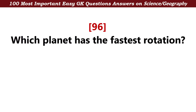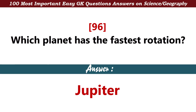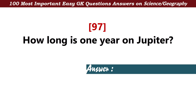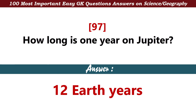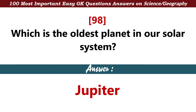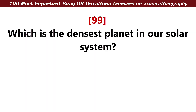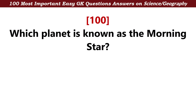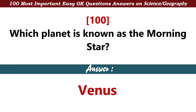Which planet has the fastest rotation? Answer: Jupiter. How long is one year on Jupiter? Answer: 12 Earth years. Which is the oldest planet in our solar system? Answer: Jupiter. Which is the densest planet in our solar system? Answer: Earth. Which planet is known as the morning star? Answer: Venus.